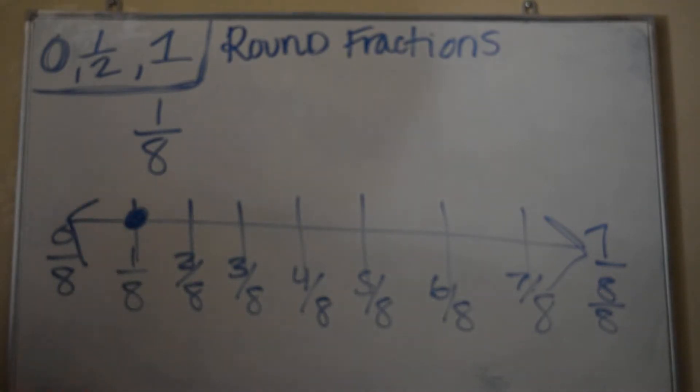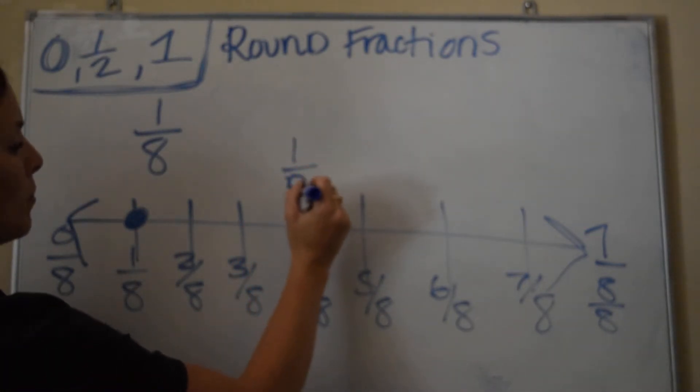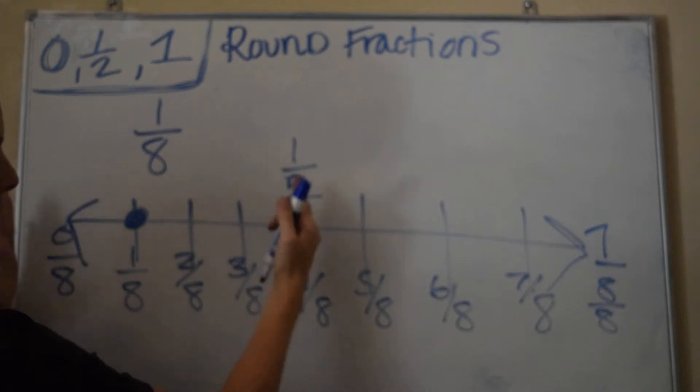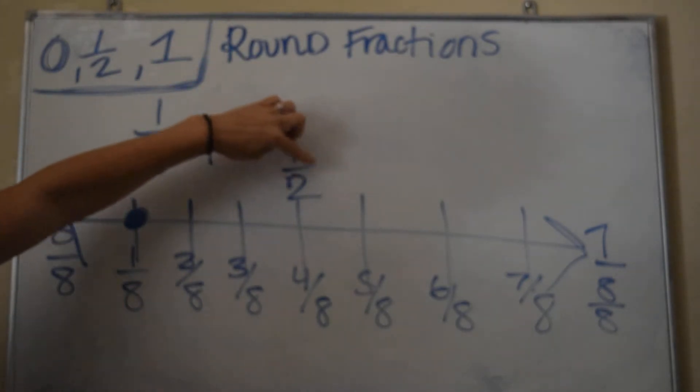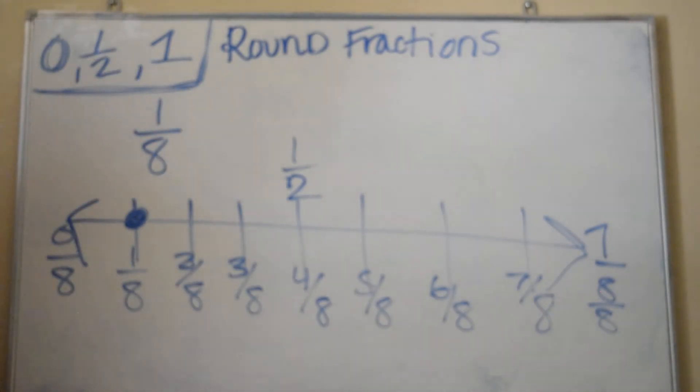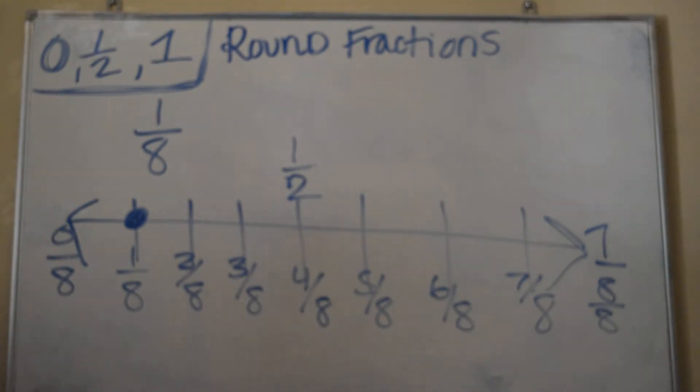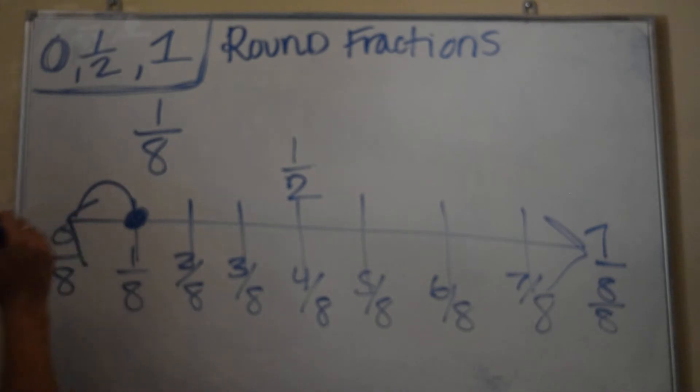Don't forget to label your half. Half would be here because it's right in between. It's half of the whole, and 4 is half of 8. So it's the same thing. Is my 1/8 closer to 0, closer to a half, or closer to a whole? Well, hopefully you can just eyeball it. It's only 1 away from 0,